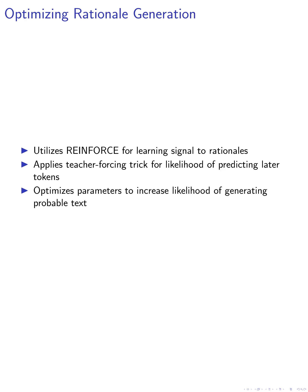we employ REINFORCE to provide a learning signal to rationales based on their impact on future token prediction. A teacher forcing trick is applied to include the likelihood of predicting later tokens in the loss function.